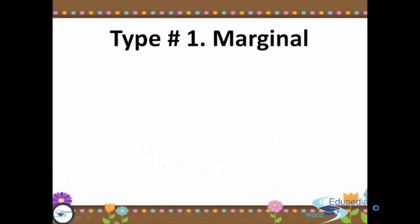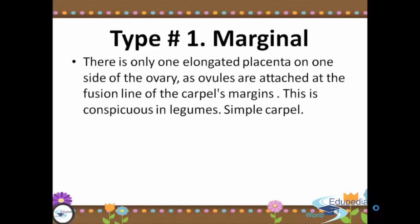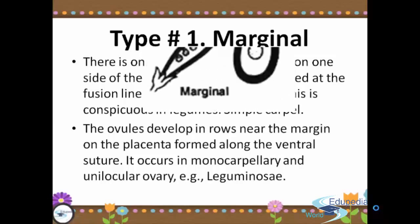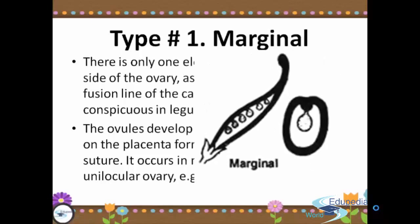We have the types of placentation. First, we have marginal placentation. There is only one elongated placenta on one side of the ovary, as ovules are attached at the fusion line of the carpal margins. This is conspicuous in legumes and simple carpal. The ovules develop in rows near the margin on the placenta formed along the ventral suture. It occurs in monocarpillary and unilocular ovary, as in Leguminosae.